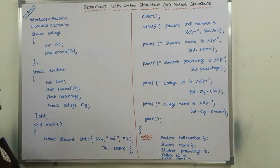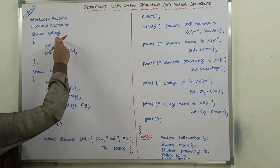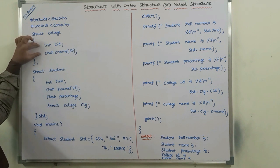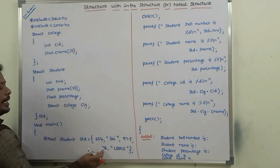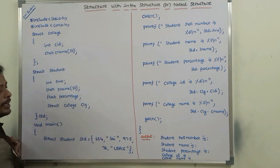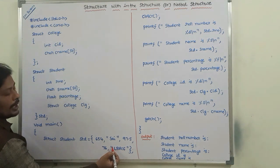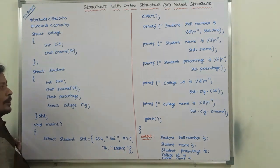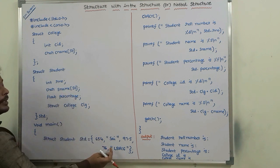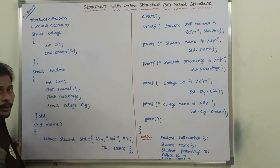By using this structure, we are initializing the nested structure members also: college ID is 76, college name is LBRC — that is a string so we put it in double quotes. Student name 'Sai' is also a string put in double quotes.